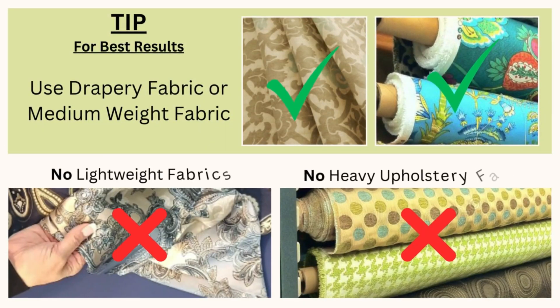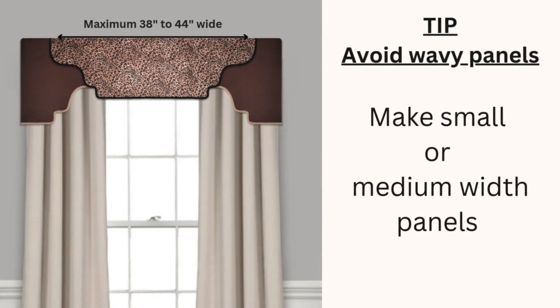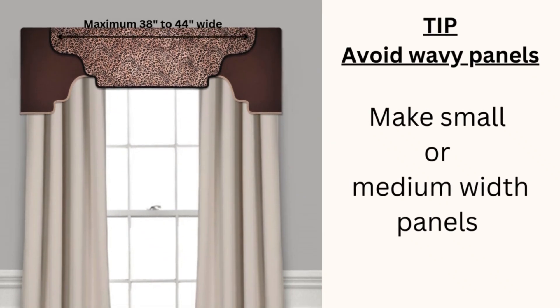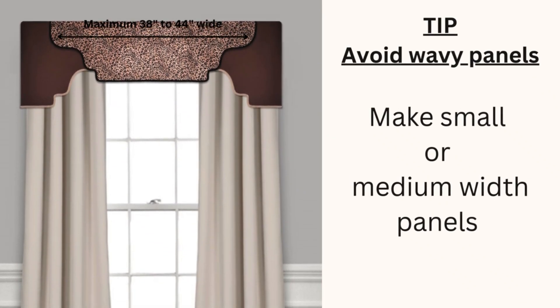A couple additional tips: Use drapery fabric or medium weight cotton fabric. Avoid lightweight fabrics or heavy upholstery fabric for best results. To avoid wavy panels, try to keep your panel size under 44 inches wide.